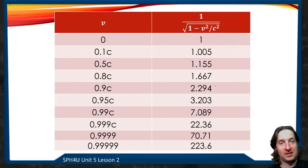At 90% of the speed of light, time will slow down by a factor of 2. And then at 0.999999, this is 99.9999% the speed of light, we're going to slow down by a factor of 200.